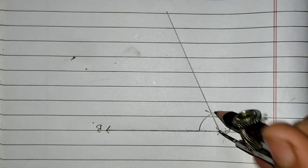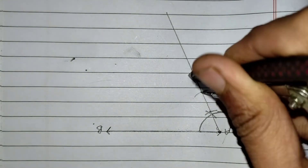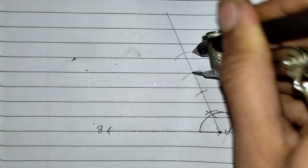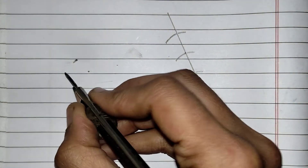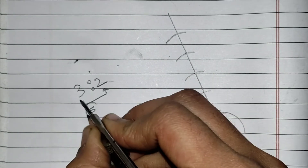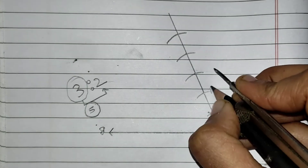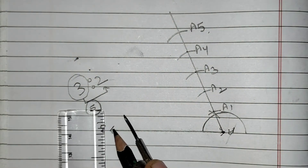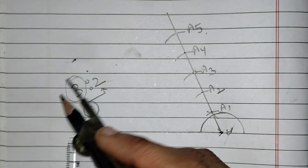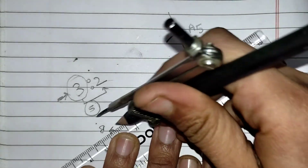Now, with the same compass setting, mark the total number of arcs on this line equal to 5 — do not change the dimensions of your compass, otherwise the results will not be correct. Mark 1, 2, 3, 4, and 5. I have taken 5 because I have to divide the line in the ratio 3 is to 2, and 3 plus 2 equals 5. Label these points A1, A2, A3, A4, and A5. Now take the endpoint B and join it with the third point A3, because the first value in the ratio is 3.